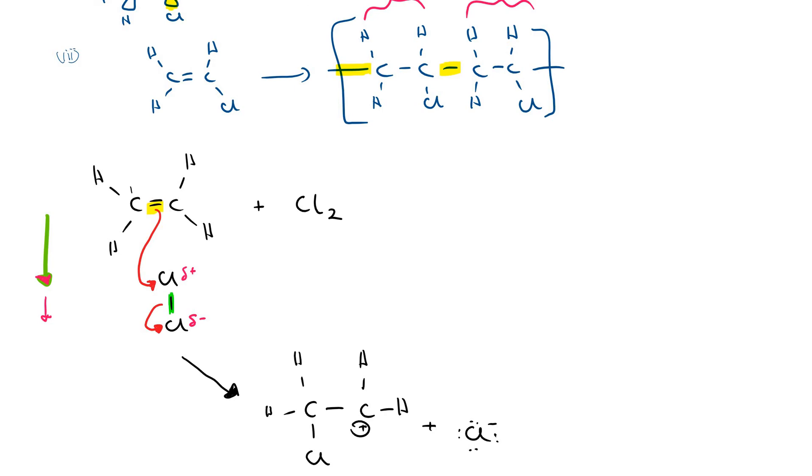So what then happens is - this is a pretty instantaneous step - one of the lone pairs simply goes and attacks that carbon atom. Because that carbon atom is missing an electron, it's only got 3 so it's got a positive charge. This chloride ion is negatively charged, and what happens is it pretty quickly snaps shut to form the product.